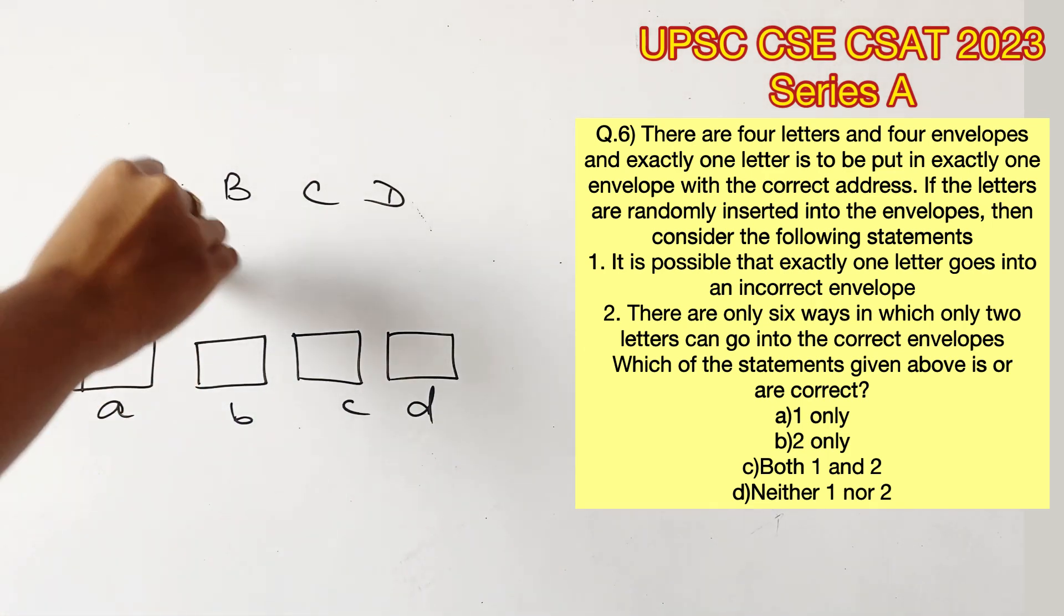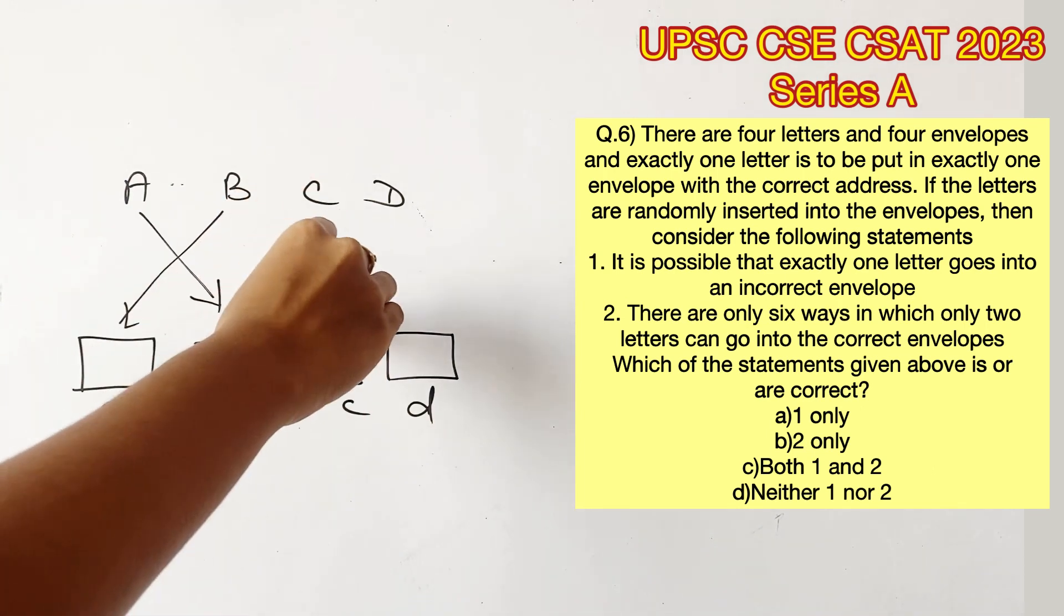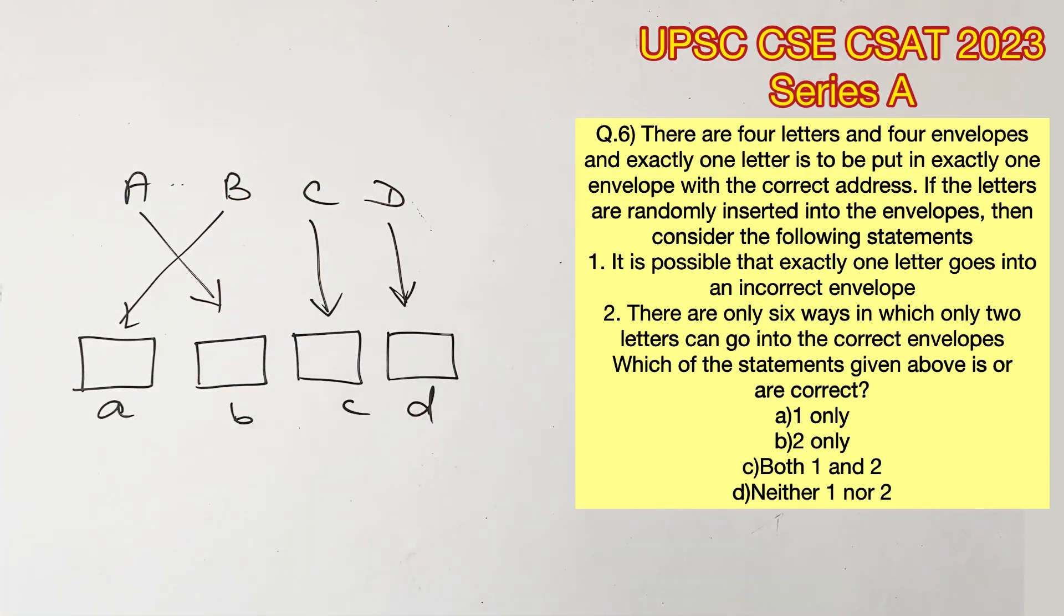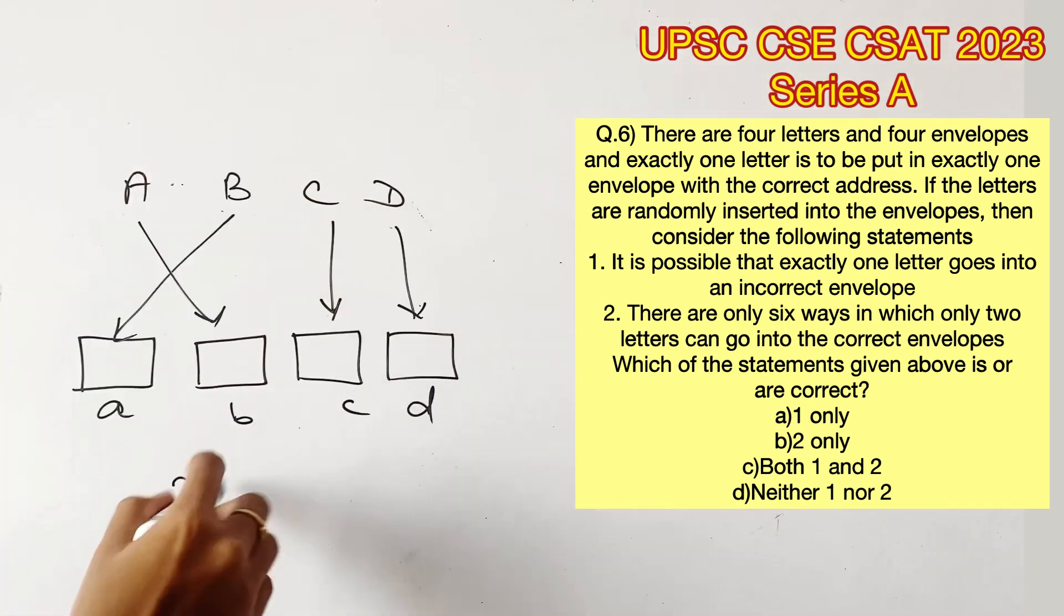This is not possible because let's say we mismatch A. Once you mismatch a letter, we know that the correct letter cannot occupy that space because it's already filled by the incorrect letter. So any possibility you try, the minimum number of incorrect placements would be two.